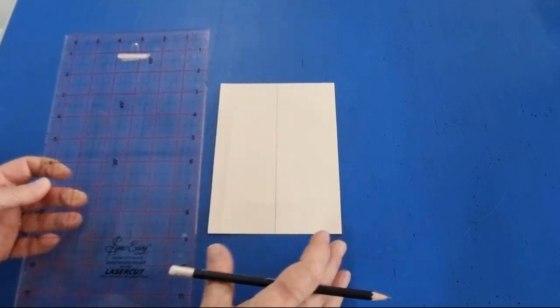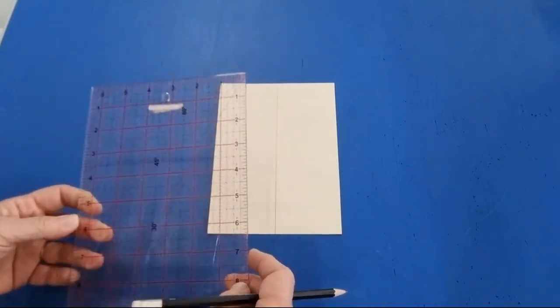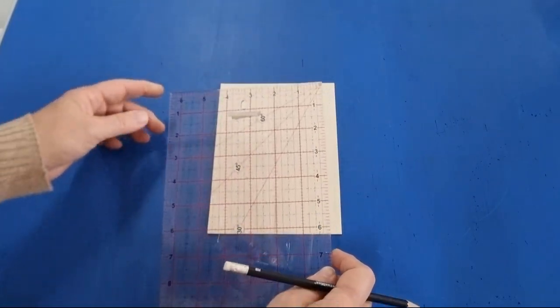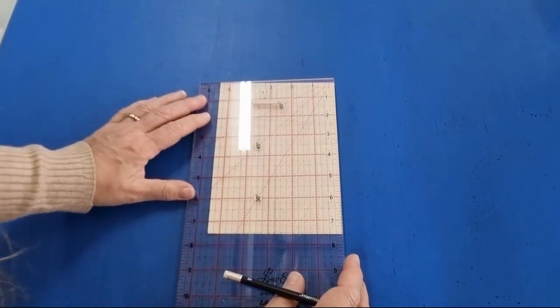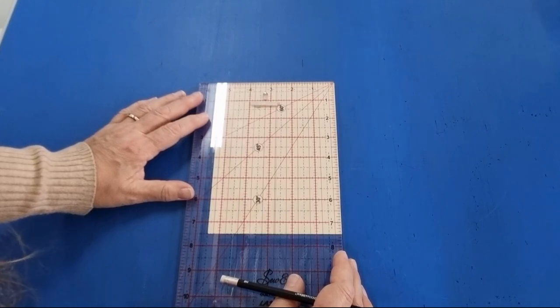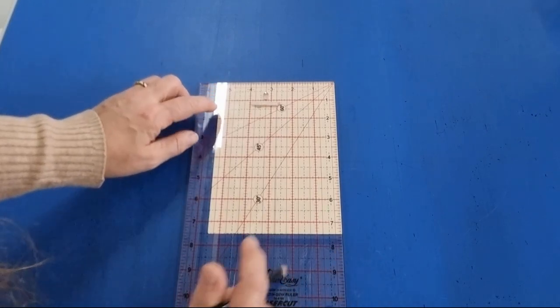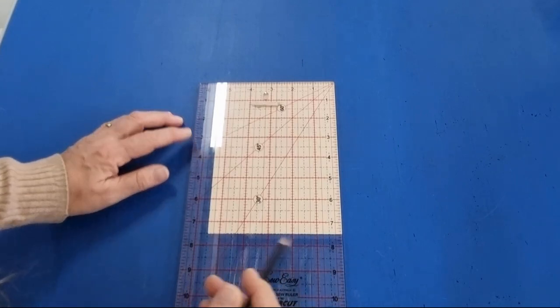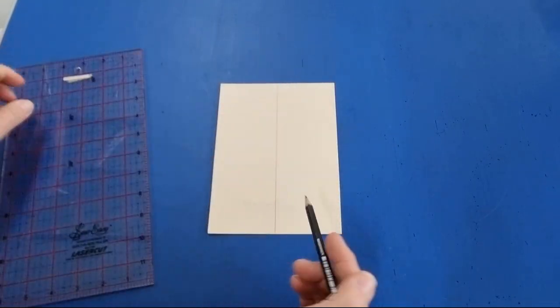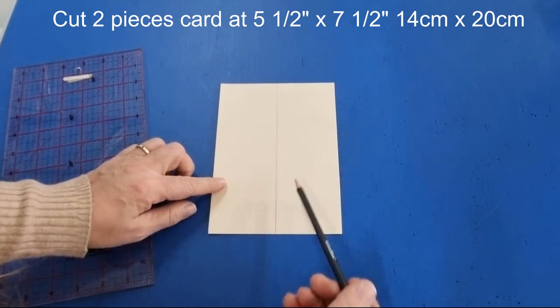The first thing that we're going to do is take a couple of pieces of paper or tracing paper, whatever you want as your pattern. This is some good cardstock, and I've cut my paper out at five and a half inches across and seven and a half inches in length.